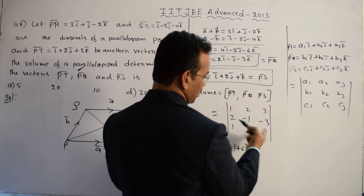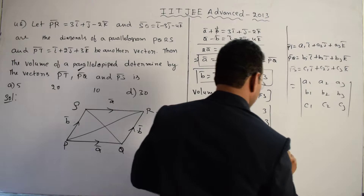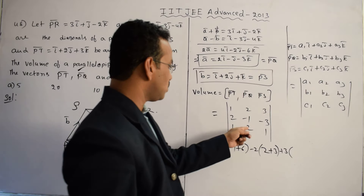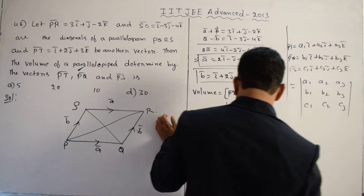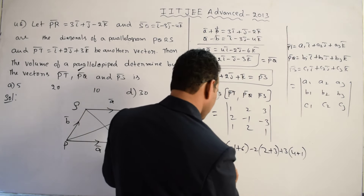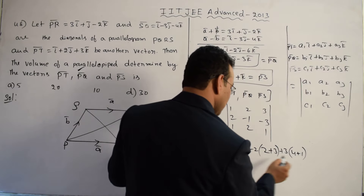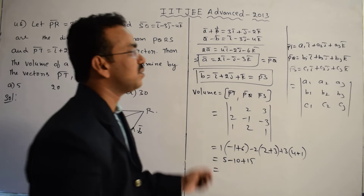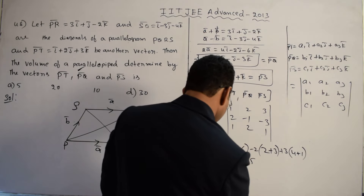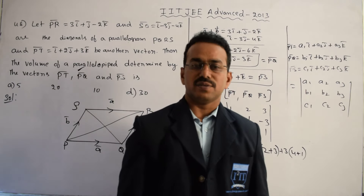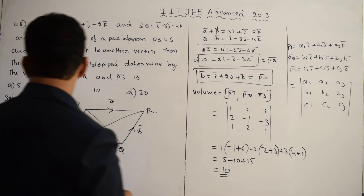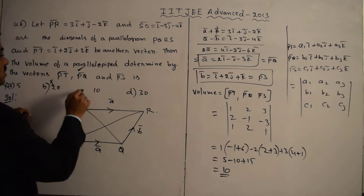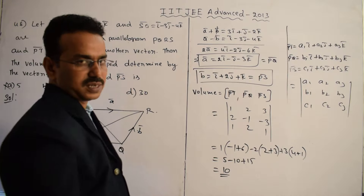Computing the determinant: expanding along the first row gives terms. Evaluating: (-1 + 6) = 5, then (2 + 3) = 5, combining: 5 × 3 = 15, and 20 - 10 = 10. So the volume equals 10 cubic units. Comparing with the given options, the first option (5) is incorrect, the second option (20) is incorrect, and the third option (10) is correct.